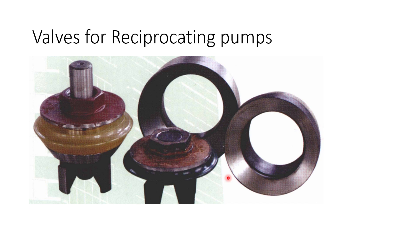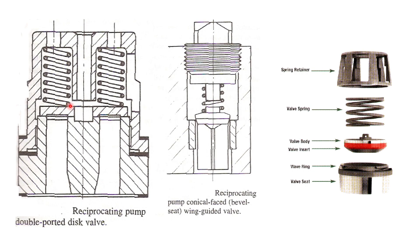Now let us see some valves used on the reciprocating pump. Both the suction and discharge valves of the reciprocating pump are non-return valves. The suction valve opens inside the pump and the discharge valve opens outside the pump. This is the valve which sits and does the sealing. This is the metallic type. There are different types of valves used. Here, this is called a double ported valve — it has two ports and is a disc valve loaded with a spring. The spring closes the valve and the pressure of the fluid opens the valve.